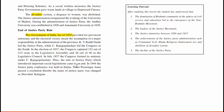In 1944, the Justice Party conference was held in Salem, and Periyar E.V. Ramasamy passed a resolution whereby the name of the Justice Party was changed to Dravidar Kazhagam.